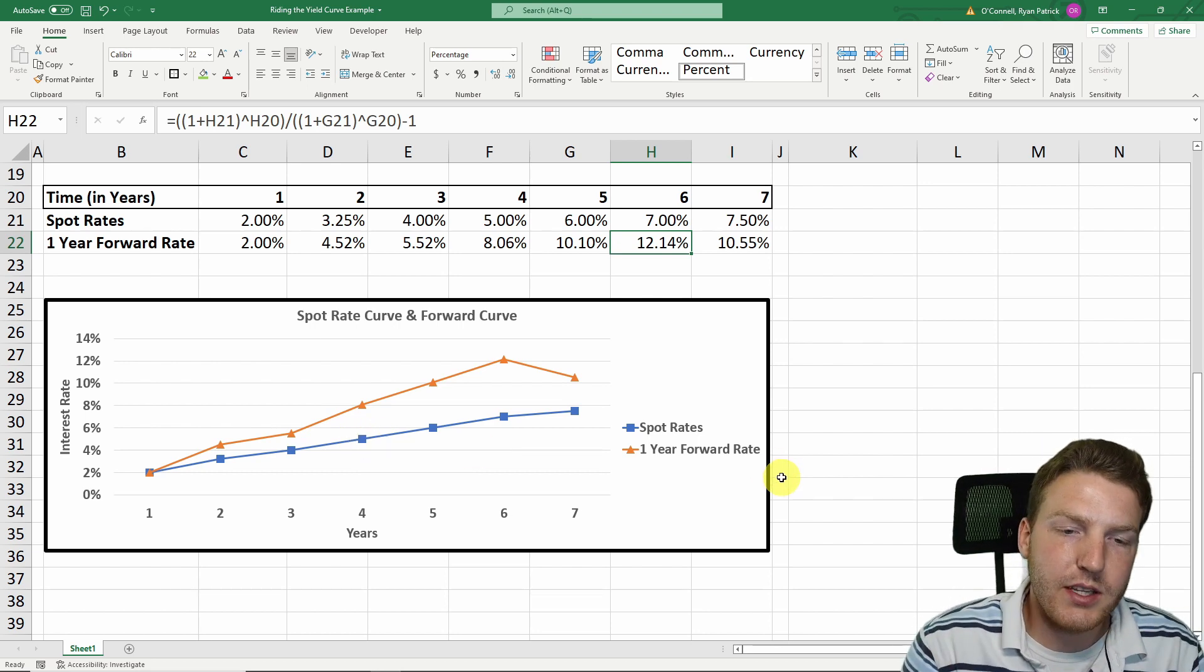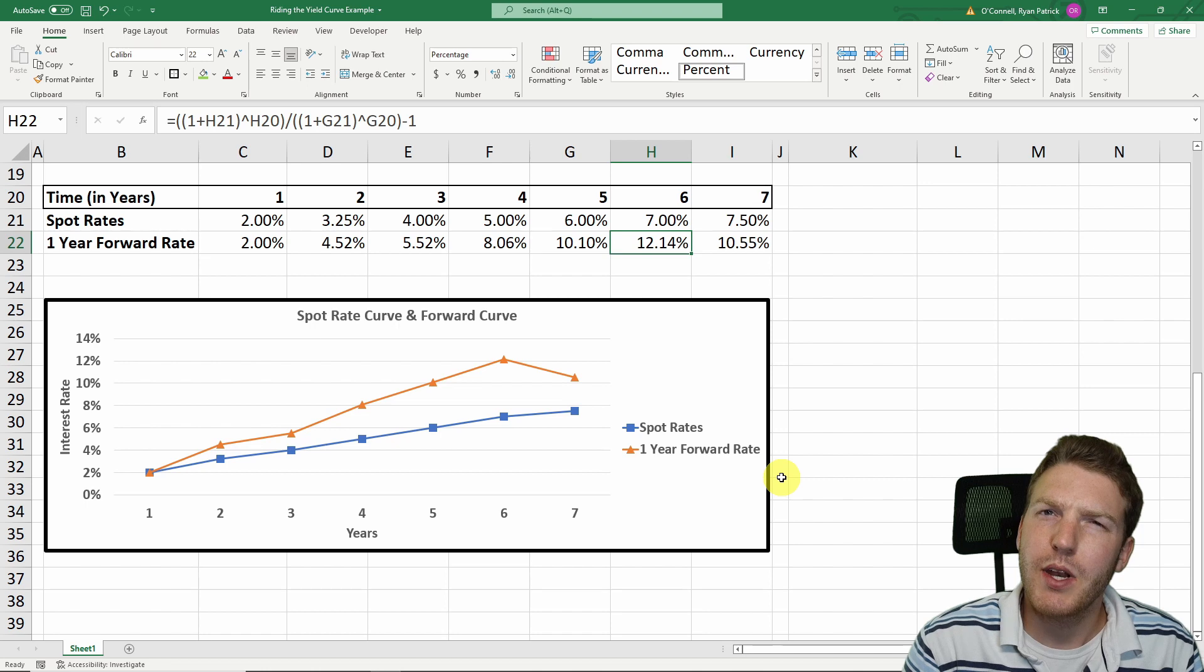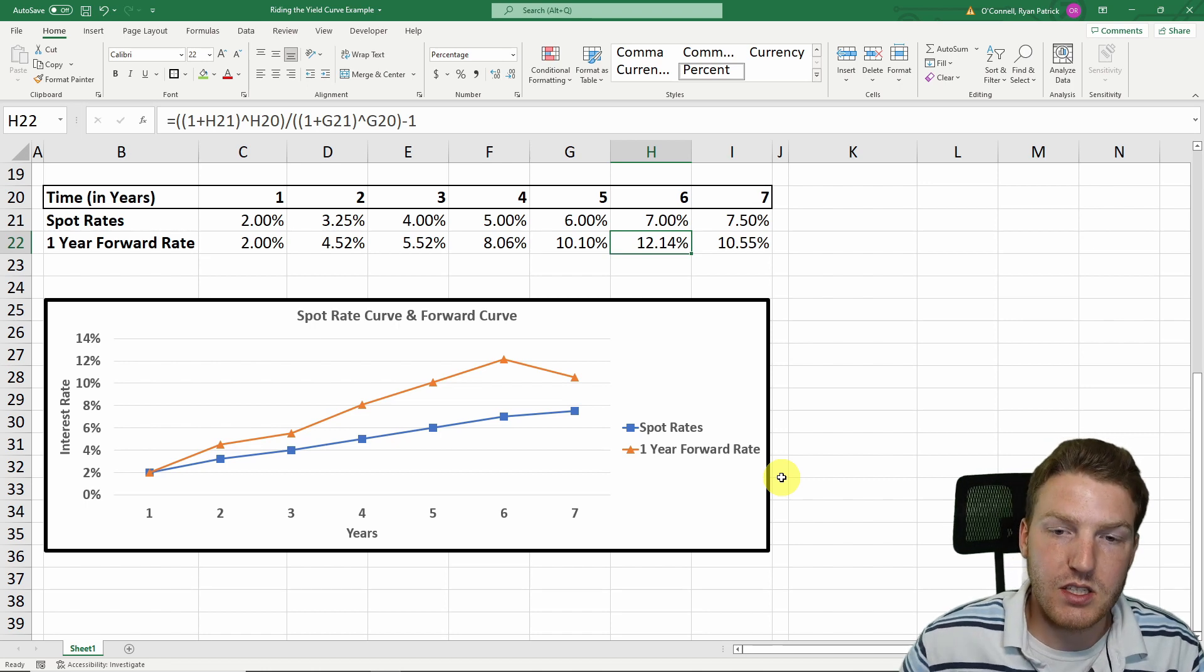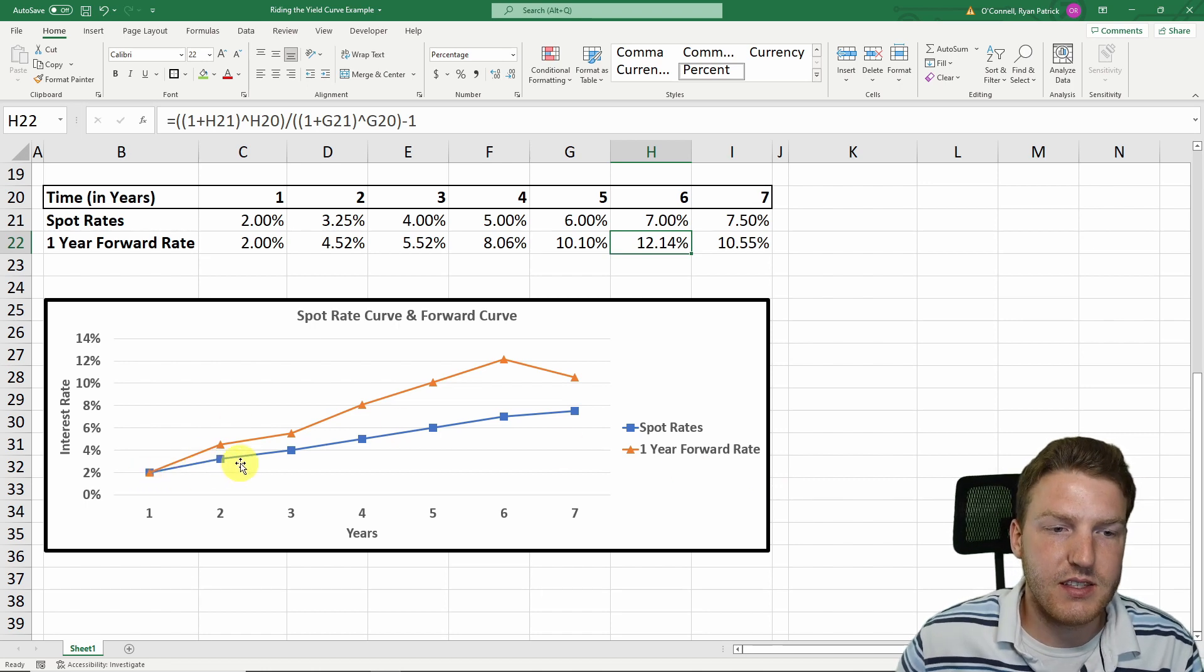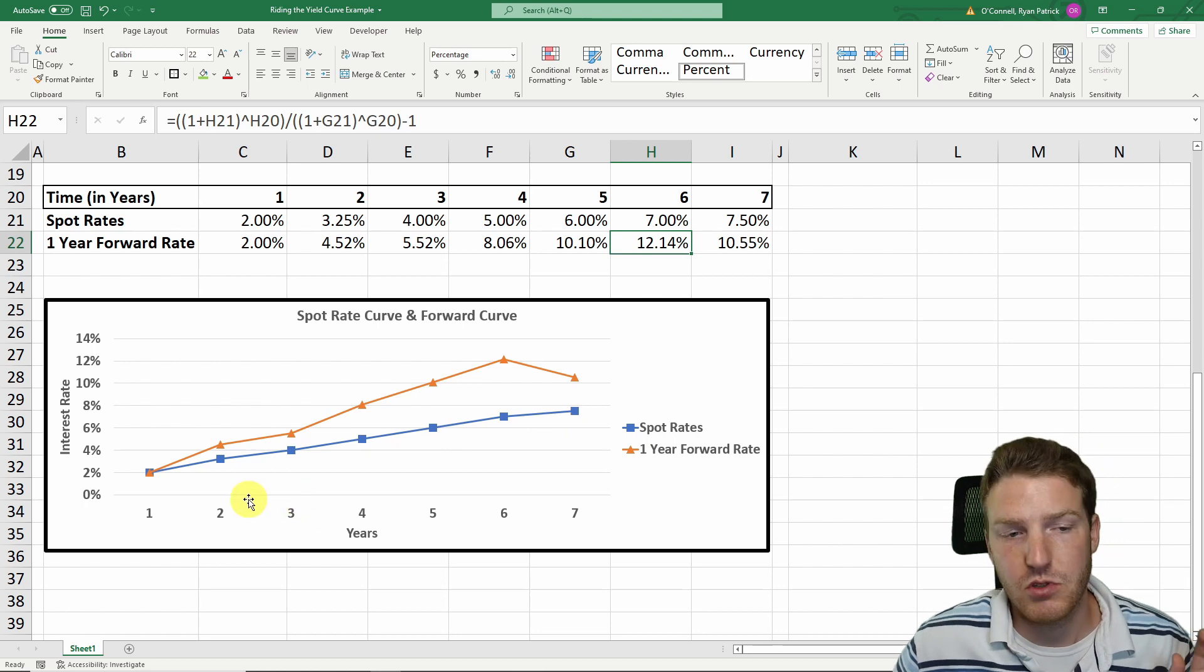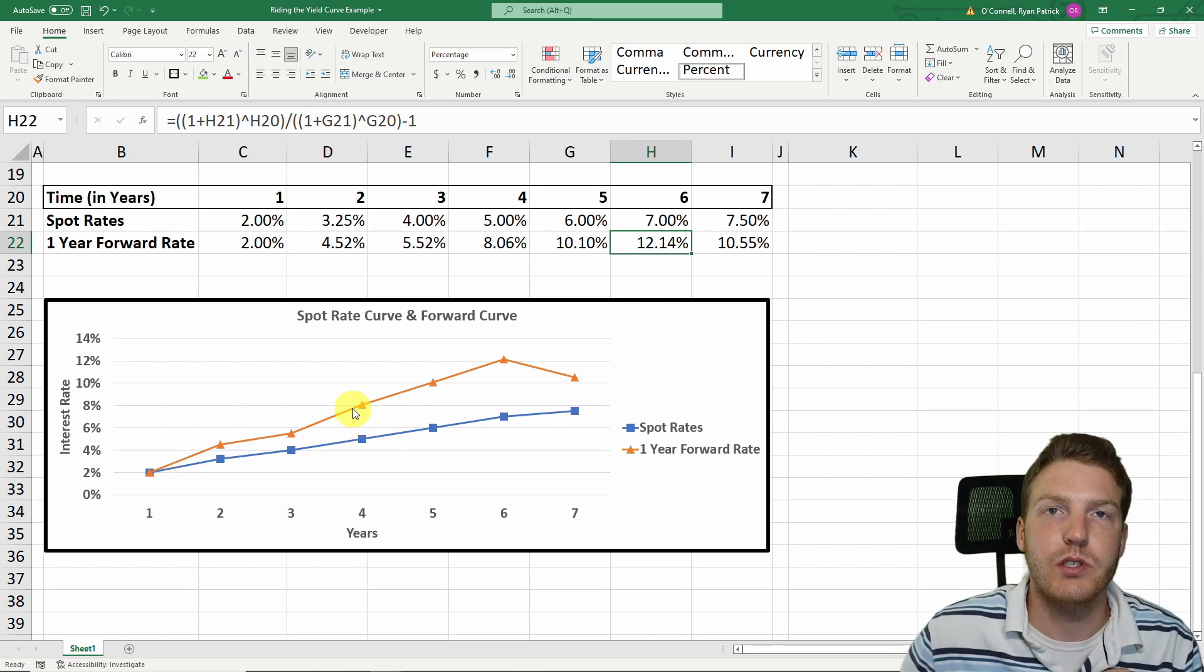But in order for this strategy really to work, we would actually need for the spot rate curve to stay the same size with the same slope and the same rates over time.